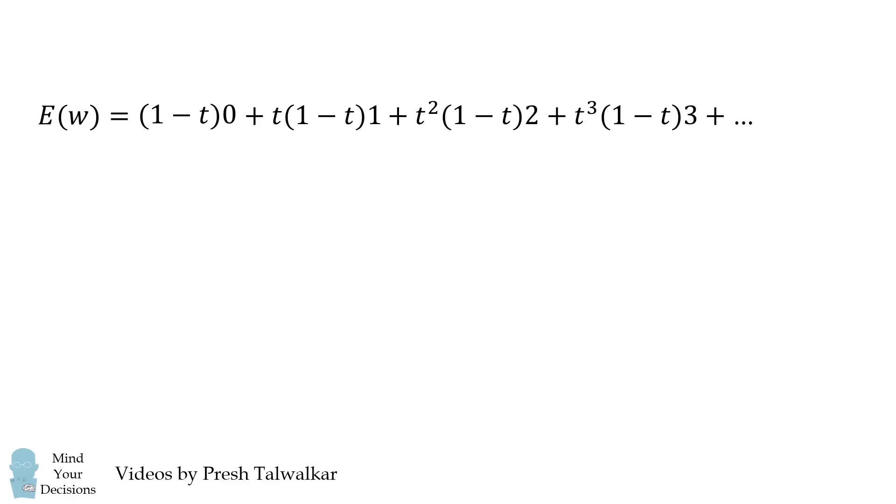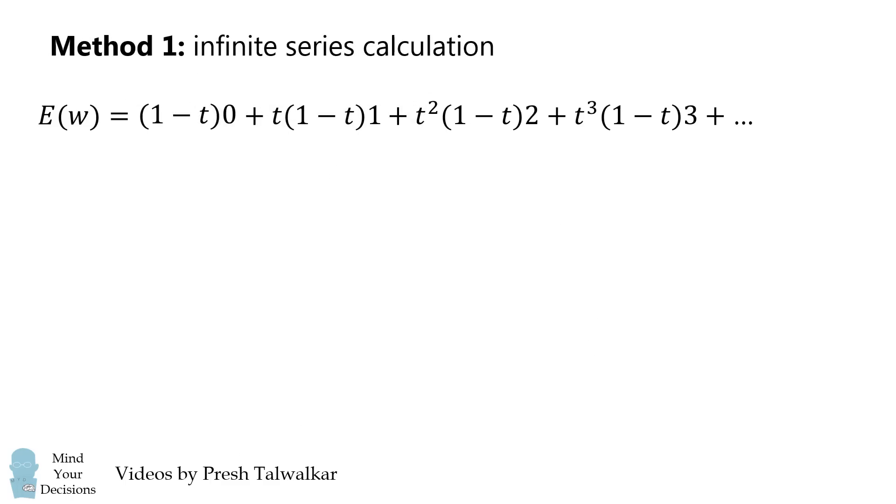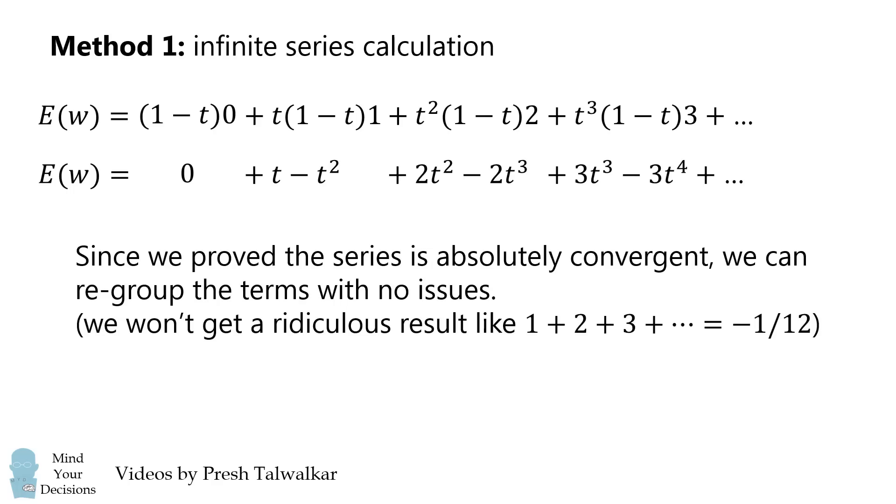So now, let's evaluate this series. How are we going to do that? The first thing we'll do is we'll distribute the term 1-T. Now, since we prove the series is absolutely convergent, we can regroup the terms with no issues. We won't get a ridiculous result, like the sum of all natural numbers is equal to negative 1/12.